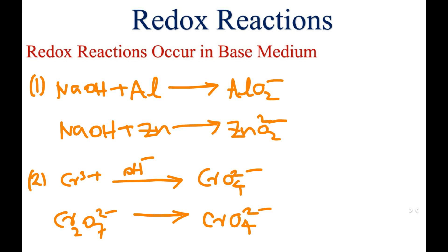Regarding oxidation state changes: aluminium takes 0 oxidation state and in AlO₂⁻ aluminium takes +3. Zinc takes 0 and in ZnO₂²⁻ zinc takes +2 oxidation state. We also consider Cr³⁺ in alkaline medium.